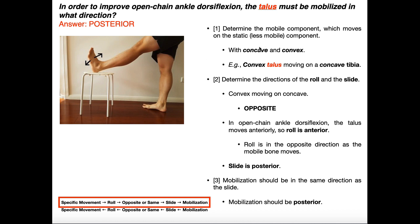We need to figure out which bone is concave and which is convex. The tibia at its distal end has a plateau, so the tibia is concave, and the talus is convex. We want to form a sentence like 'blank is moving on a blank.' In this case, we're mobilizing the talus, so it's a convex talus moving on a concave tibia — something mobile moving on something static.